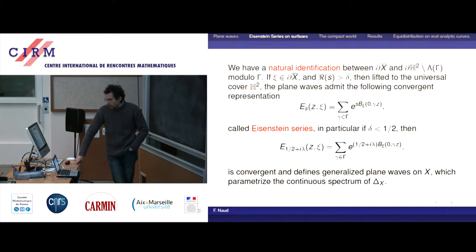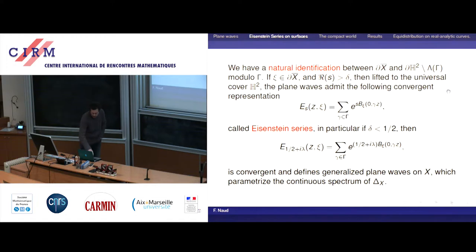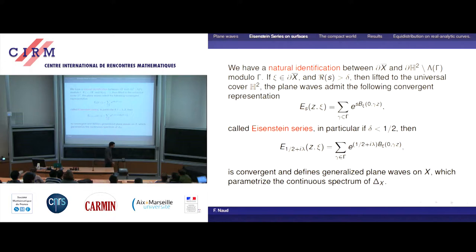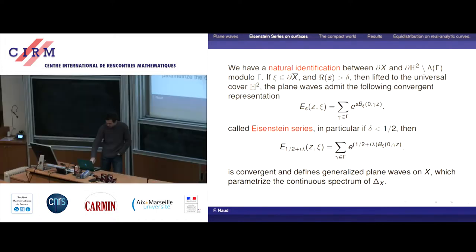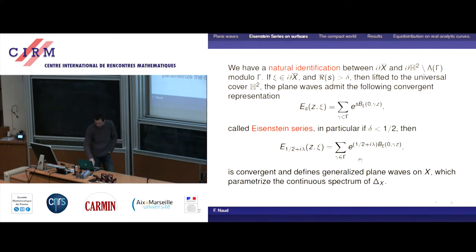What I am mostly interested in is when the spectral parameter is on the continuous spectrum, because that gives an eigenfunction associated to a real eigenvalue — the guys which actually parametrize the continuous spectrum. In the case when the Hausdorff dimension of the limit set is smaller than one half, you can get all these Eisenstein series by a convergent series — there is an actual formula for this.